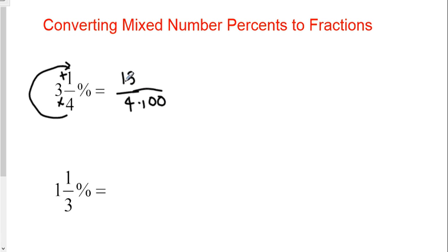Now, what's going to happen here is every once in a while, this 13, the numerator, and this 100 will be able to simplify each other. In this case, it's not going to happen. So, this is just 13 over 400. And that is the fractional equivalent of that number.